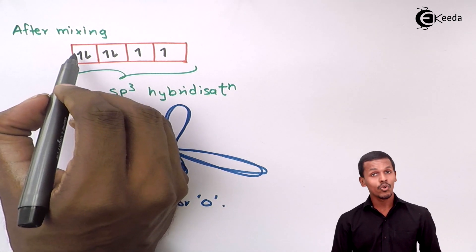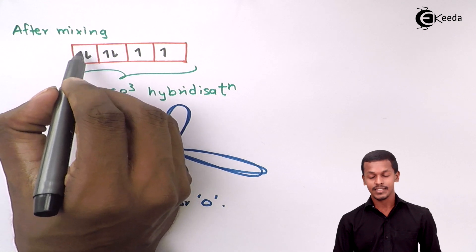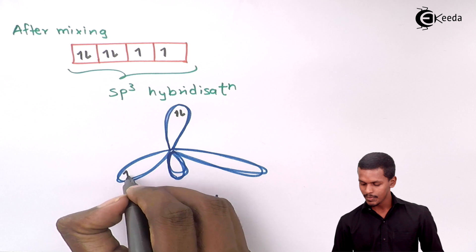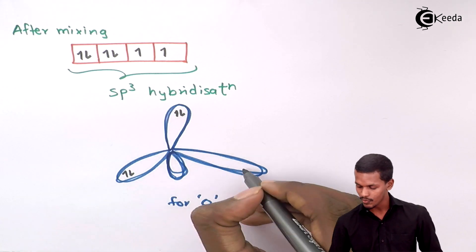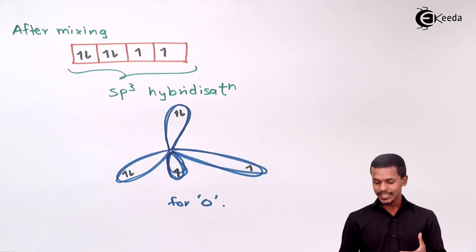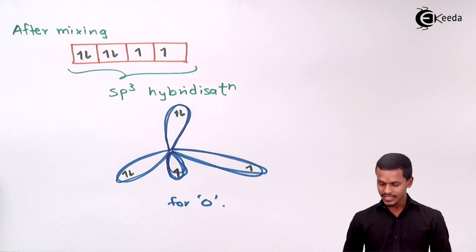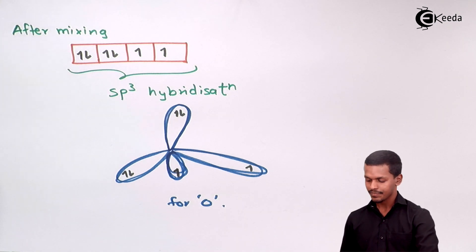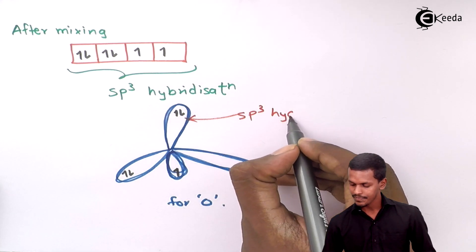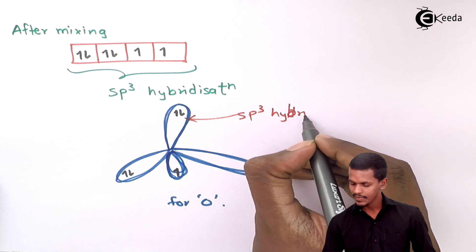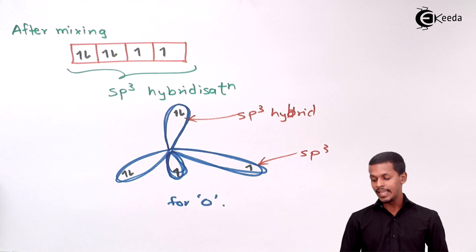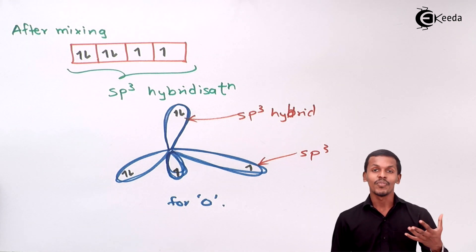We can see that 2 lone pairs of electrons are present in 2 of the sp3 hybrid orbitals — each containing 2 electrons. The remaining 2 sp3 hybrid orbitals each contain 1 unpaired electron from oxygen, which will form bonds with hydrogen. All of these are sp3 hybrid orbitals, and they will form bonds with the hydrogen atoms.